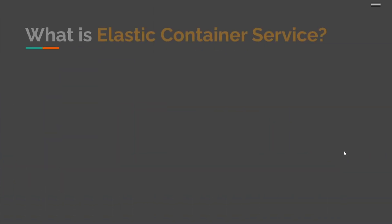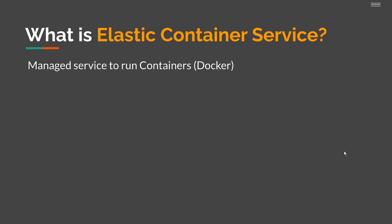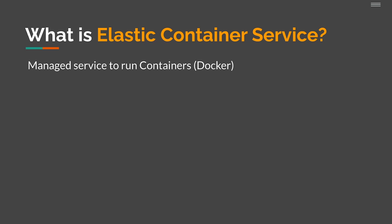So the first topic is: what is Elastic Container Service? ECS is a managed service to run containers, typically using Docker. Docker is essentially a tool that allows developers to launch containers and ensure that container instances are isolated from one another. ECS kind of sits on top of Docker, allowing you to launch, set up, and monitor your Docker containers on your ECS cluster.